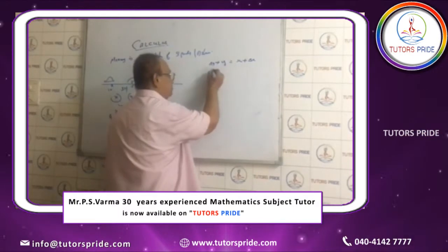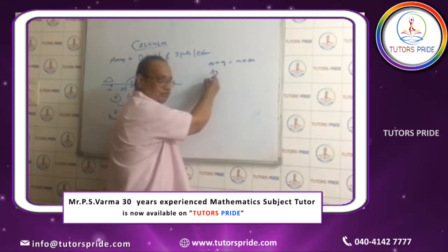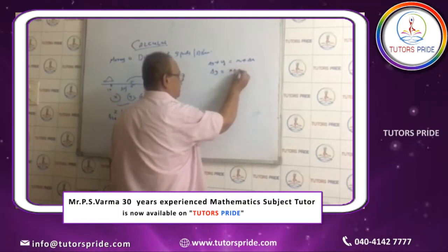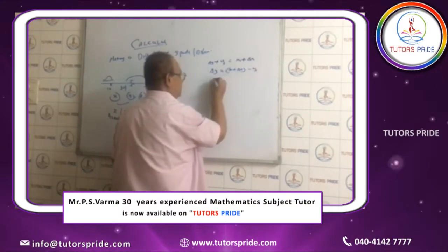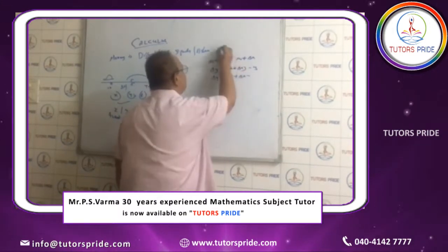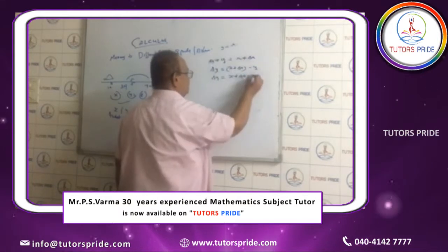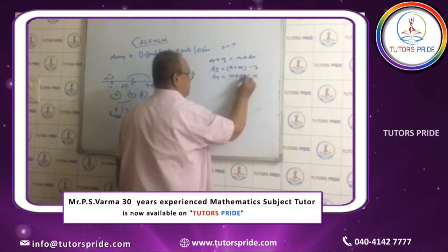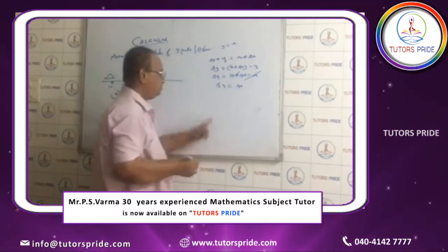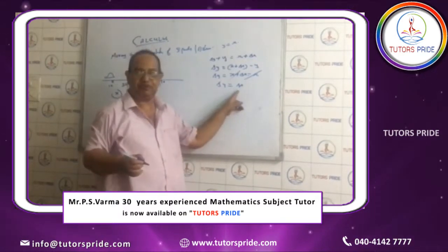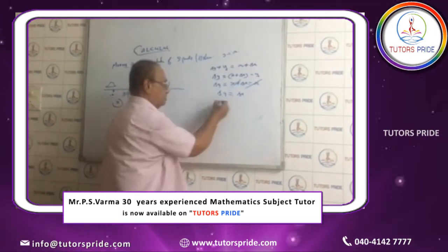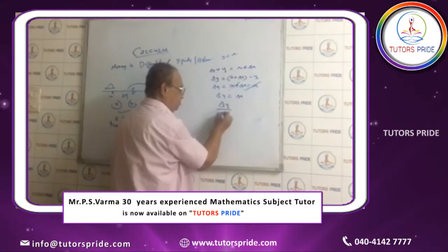If I want to measure Y — that means the son's income — I can write: delta Y equals X plus delta X minus Y. Since Y equals X is already there, minus X, so this and this cancel. The measurement of the son's income is still depending upon the measurements of the father. Now we have to put a full stop — that means I can introduce the limit.